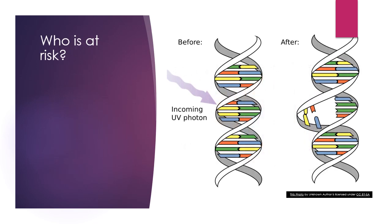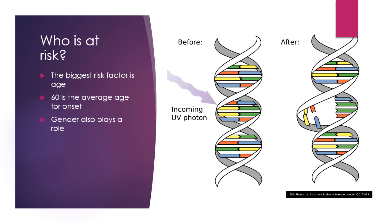Who is at risk? The biggest risk factor is age. Age 60 is the average age for onset, which is normal Parkinson's disease. Gender also plays a huge role, as men are more likely to get this disease than women. If you have a family history of this disease, you are two times more likely to get it later in life.